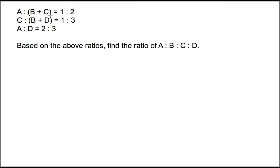Now let's look at the question. We have A is to B plus C is 1 is to 2. We have C is to B plus D is 1 is to 3, and we have A is to D is 2 is to 3. Based on the above ratios, find the ratio of A is to B is to C is to D.